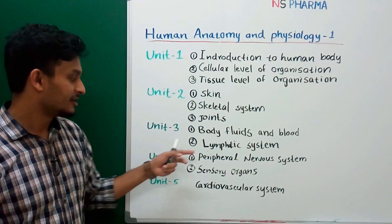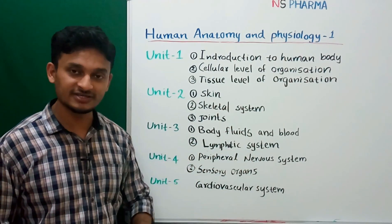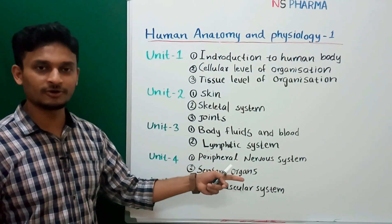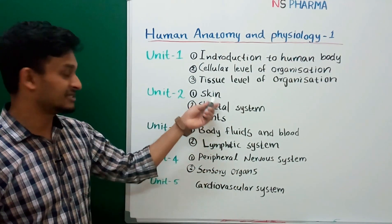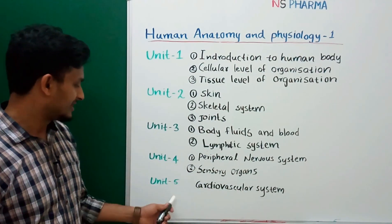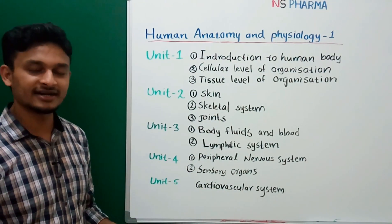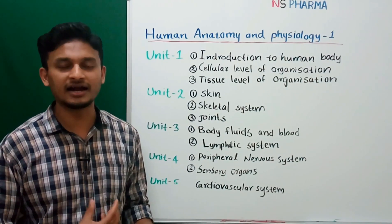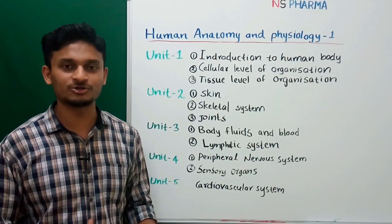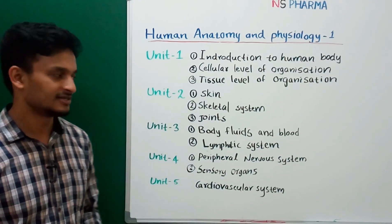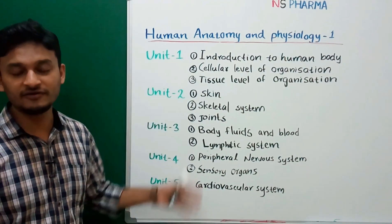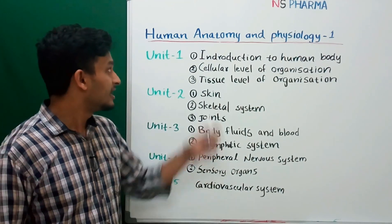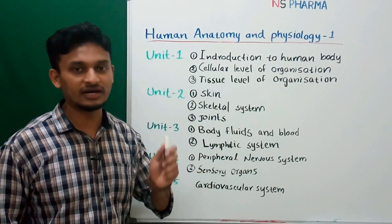Unit 4 contains two chapters: Peripheral Nervous System, and Sensory Organs except Skin. The last unit contains the Cardiovascular System — that is, Heart and Blood vessels. These are the five units you have to study for semester 1, Human Anatomy and Physiology 1.